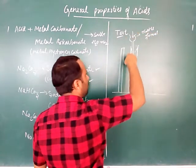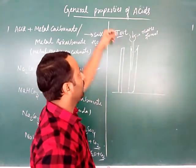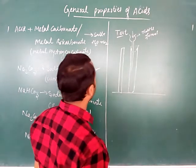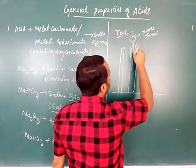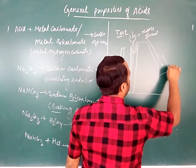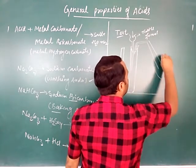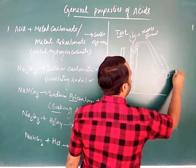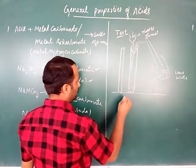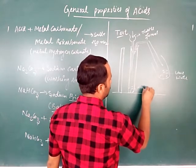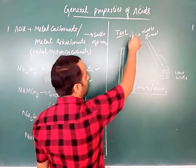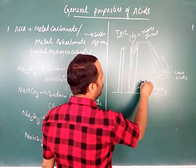The acid is added through the thistle funnel drop by drop — because acid could spill if added carelessly. We use sulfuric acid, and a delivery tube is attached. In the test tube we place sodium carbonate Na₂CO₃ or sodium bicarbonate NaHCO₃, and add sulfuric acid H₂SO₄.